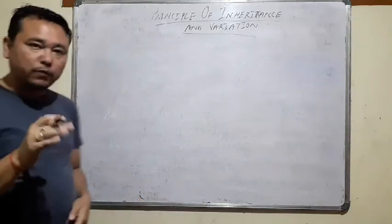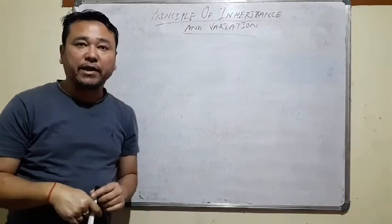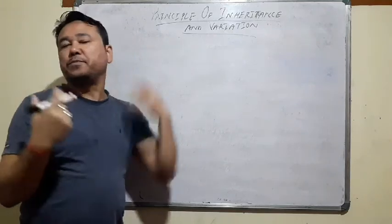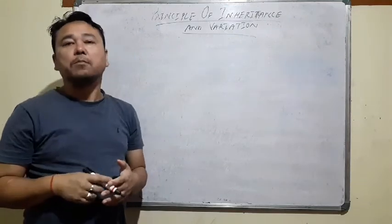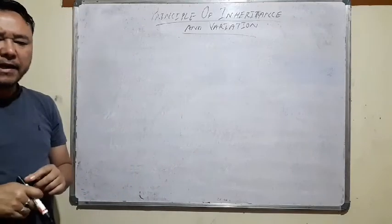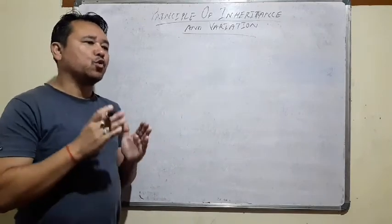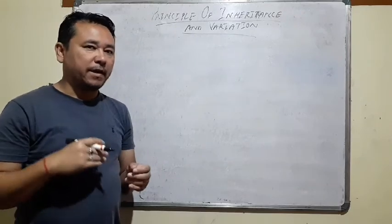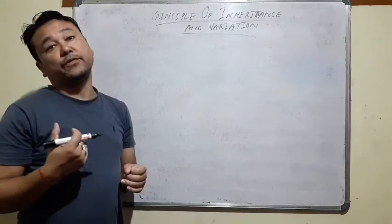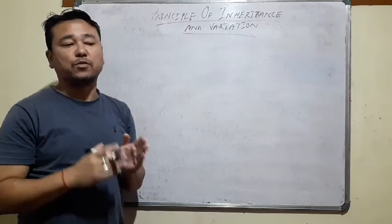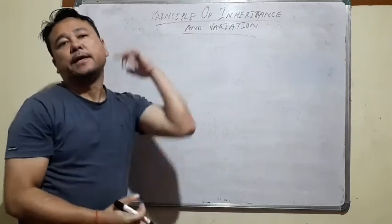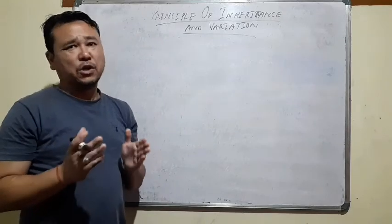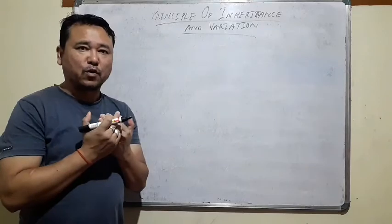Hello everyone. As we know, we are doing Principles of Inheritance and Variation. Today we are going to study about the experiment of Thomas Hunt Morgan. Thomas Hunt Morgan is associated with what is called the Chromosomal Theory of Inheritance. The Chromosomal Theory of Inheritance states that genes present in the chromosome are inherited in the next generation. We are going to study behavior factors, or genes, located in the same chromosome.